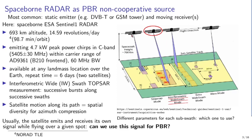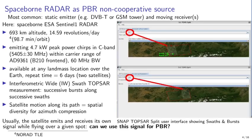The motion of the satellite along its orbit provides the spatial diversity needed for azimuth compression. The question is: now that we understand level 1 processing from the FOSDEM presentation and the RF parameters extracted from level 0 telemetry, can we use this for passive bi-static radar measurement? The ESA SNAP toolbox for Sentinel-1 level 1 data shows interferometric wide swaths 1, 2, and 3 with their bursts.